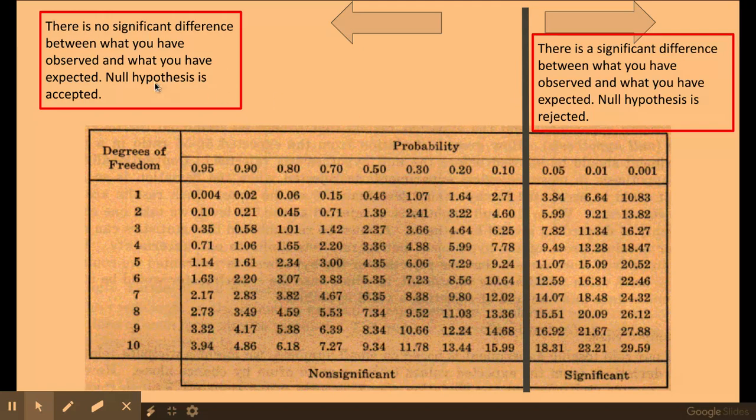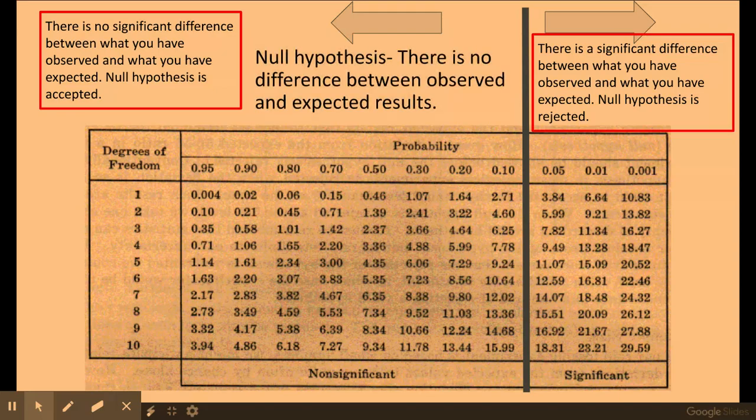If your number lies to this side of my 5% value, there is no significant difference between what you have observed and what you have expected, and your null hypothesis is accepted. Now your null hypothesis is that there is no significant difference between what you've observed and what you've expected.